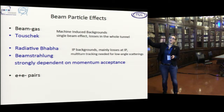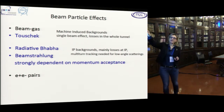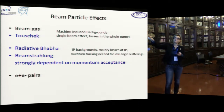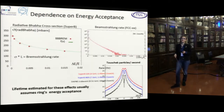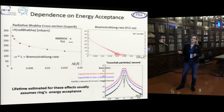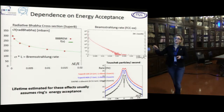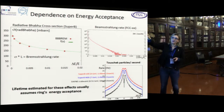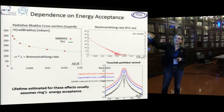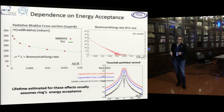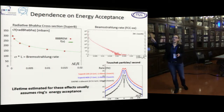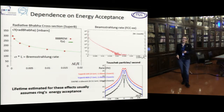The other important background sources are single beam effects and the IP backgrounds. In blue are the lost particles dependent on momentum acceptance. In particular, beam-strahlung is strongly dependent on momentum acceptance. Here is a slide showing different dependences on energy acceptance, where you can see that the cross-section as a function of delta-E over E is not very much dependent for Bhabha, while beam-strahlung is very strongly dependent. Touschek is very important in low emittance machines, and beam-strahlung at high energy is also a main issue. All these effects have to be studied, tracked, and taken into account.